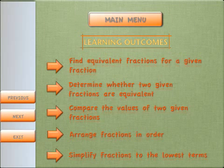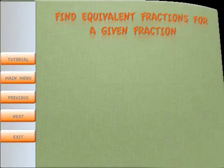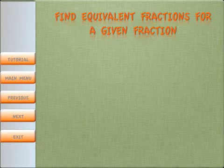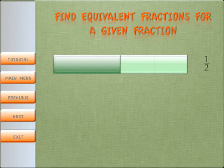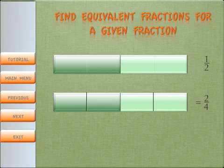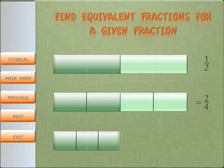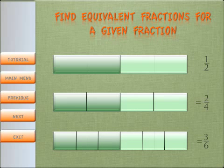This is the main menu. We have 5 learning outcomes for this course. This is the first learning outcome: find equivalent fraction for a given fraction. This is 1 over 2 which is equal to 2 over 4 and equal to 3 over 6. So the graphic here has already told the students that we are trying to find equivalent fractions for 1 over 2.